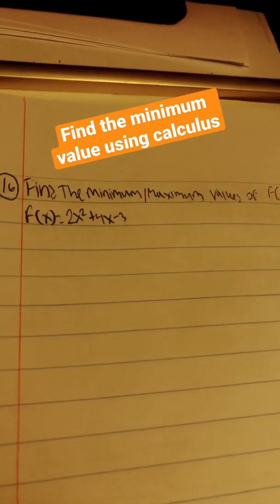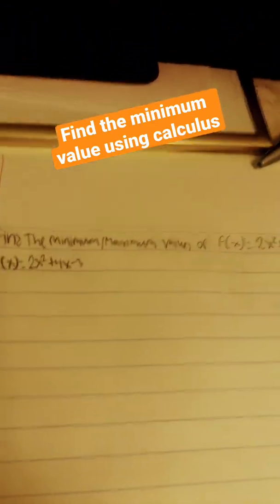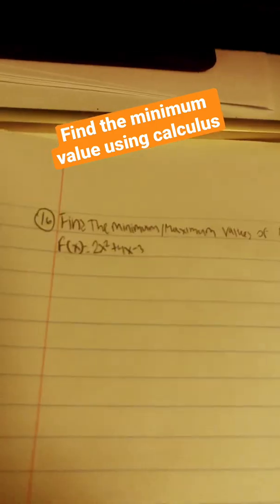Okay, so here it says find the minimum or maximum values of f of x equals 2x squared plus 4x minus 3.